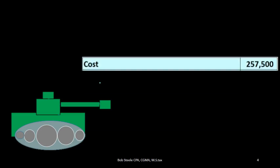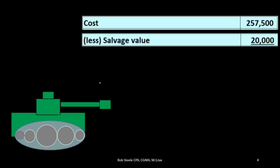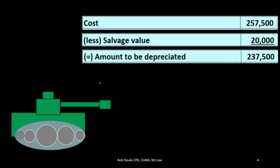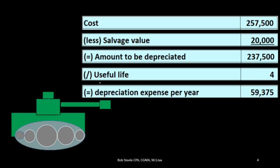With the straight-line method, we would take the cost of $257,500 and subtract from that the salvage value — what we believe we can sell the tank for or scrap it for at the end of the useful life. That gives us the depreciable amount over the useful life. Then we divide that by the useful life in order to determine how much depreciation to record each year — in this case $59,375.